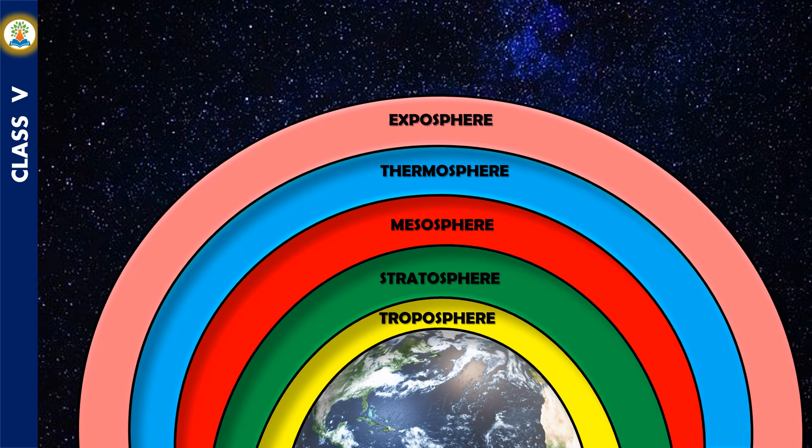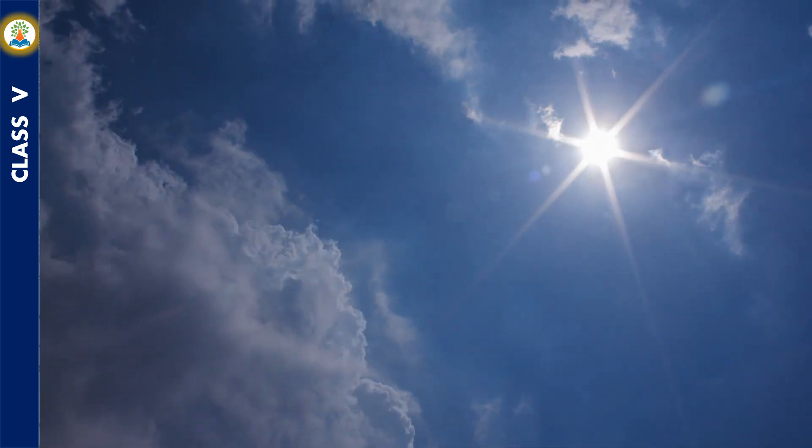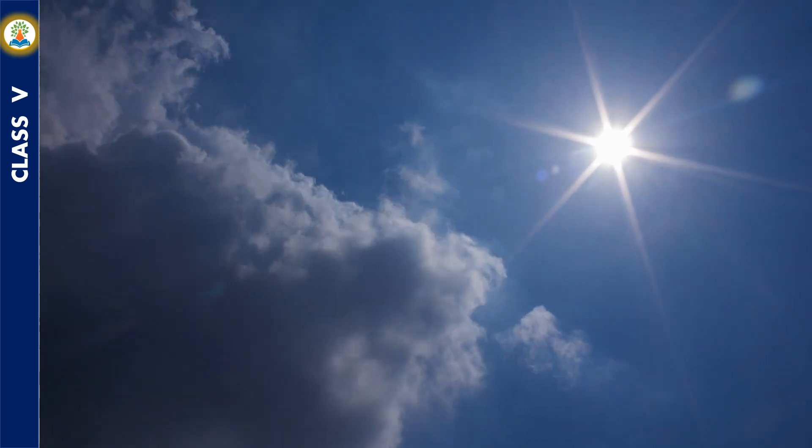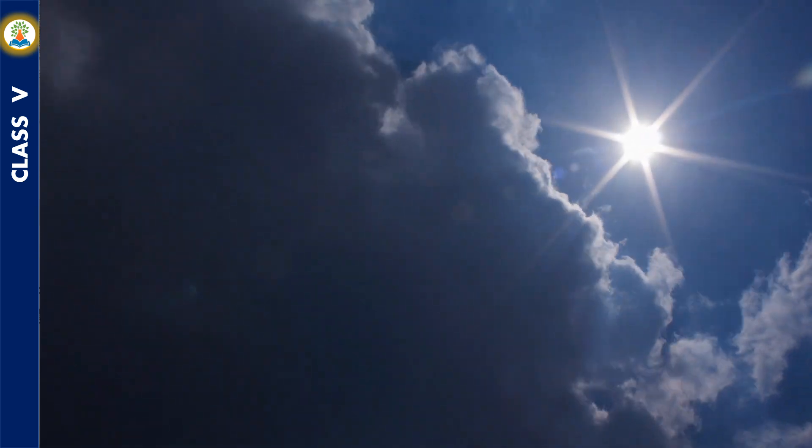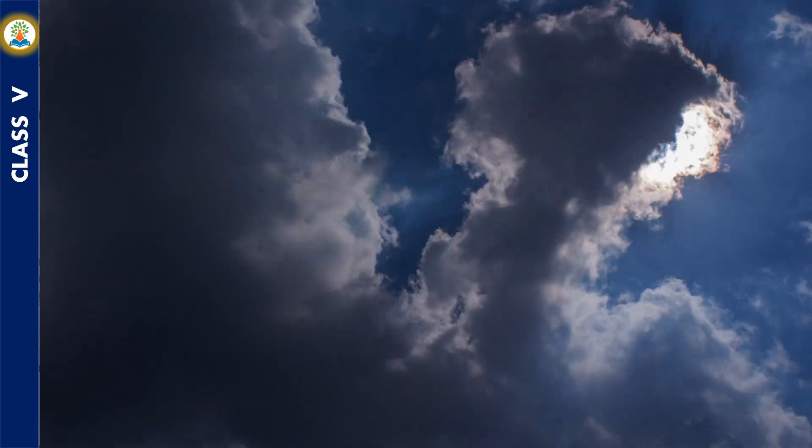The atmosphere also acts as a protective filter by preventing the harmful ultraviolet rays of the sun from reaching the Earth's surface. These rays are harmful for most living beings. The ozone layer of the atmosphere blocks a large portion of these rays and reflects them back into space.